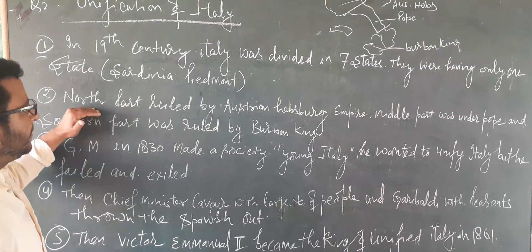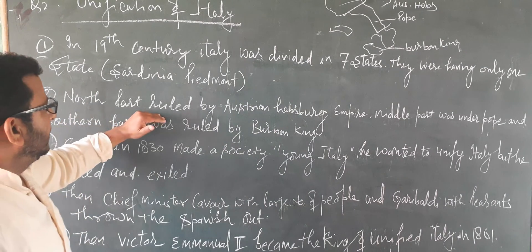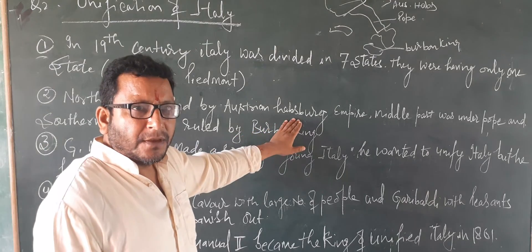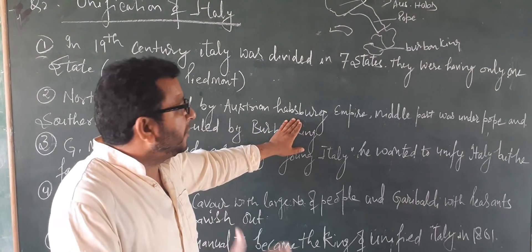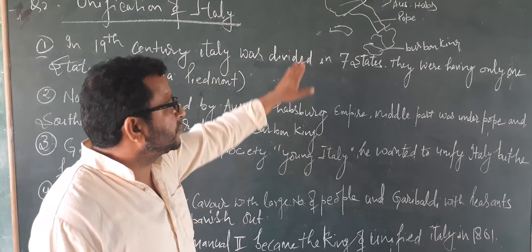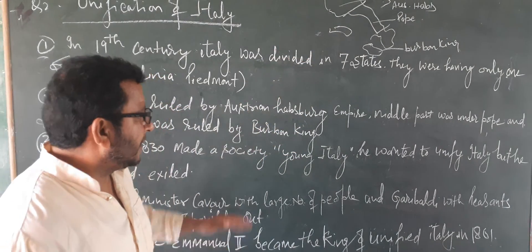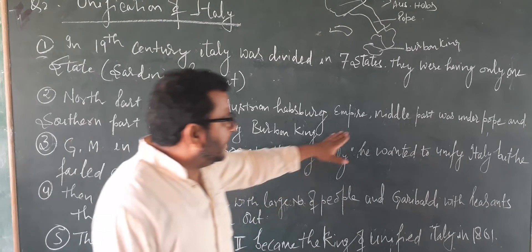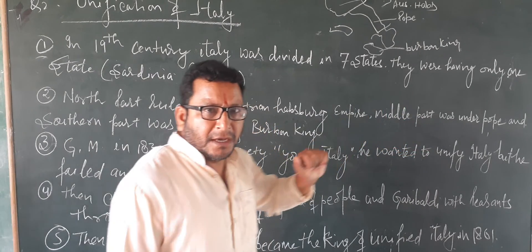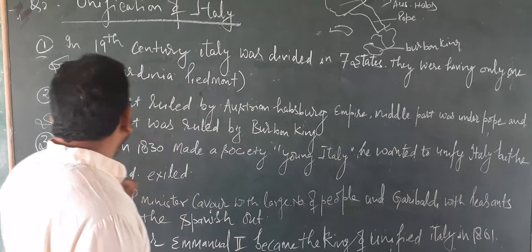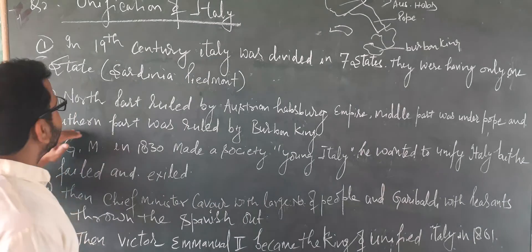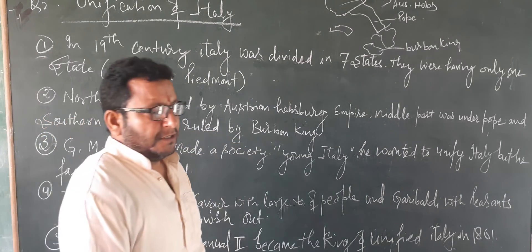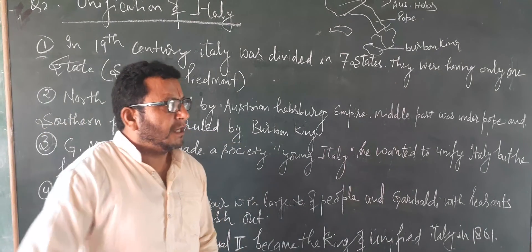Second point: the north part was ruled by Austrian Habsburg. Italy's north part was ruled by Austrian Habsburg. In the middle part was the Pope's rule, and in the southern part was the Bourbon King's rule.